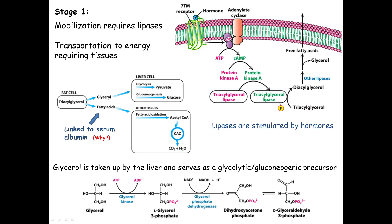Free fatty acids end up at other tissues like liver cells. In the liver, glycerol can be phosphorylated and oxidized to enter glycolysis as pyruvate, or go upward via gluconeogenesis to make glucose. The fatty acids go into other target cells — muscle cells, brain cells, or red blood cells — make their way to the mitochondria, and get turned into acetyl-CoA. That acetyl-CoA is then used in the citric acid cycle to generate electrons and ATP.